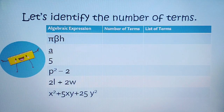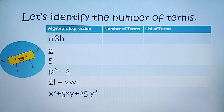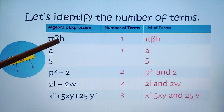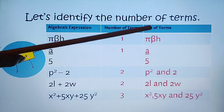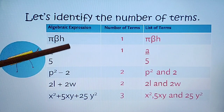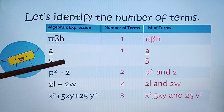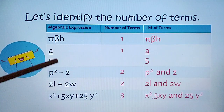Let's identify the number of terms. For the first expression, the number of terms is only 1 because there's no addition or subtraction given. The list of terms includes radius, beta, and h. For the next expression, this is also 1 because there's no addition or subtraction, so the number of terms is 1 as well, and the list of terms are those two numbers.